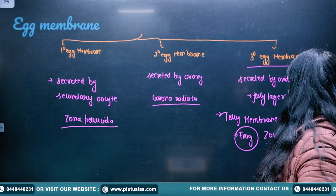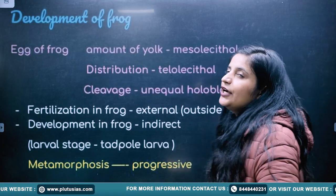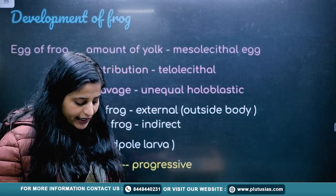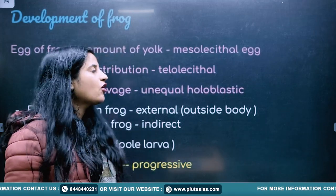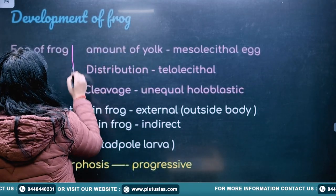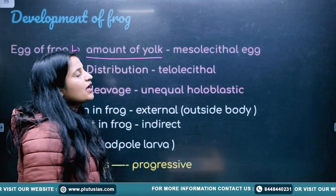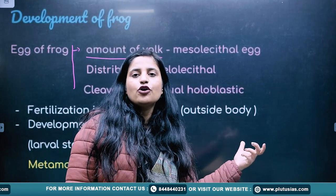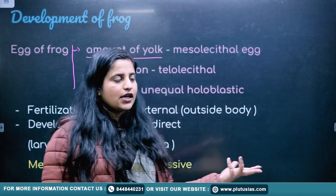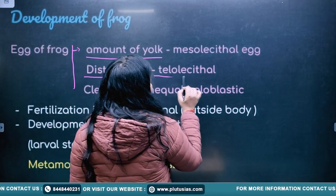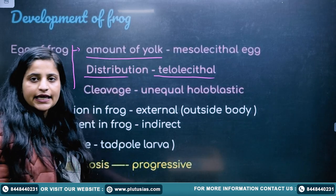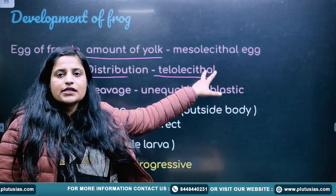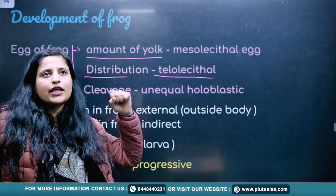On the next slide: development of the frog. Egg or frog development depends on three conditions. The first is amount of yolk — it is a mesolecithal egg. The distribution is paleolecithal. These two terms will be explained in detail when we cover the gastrulation stages.